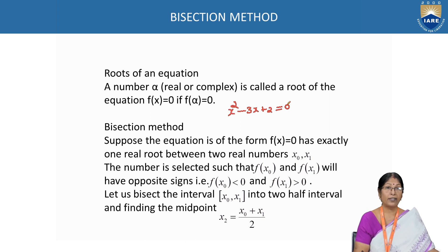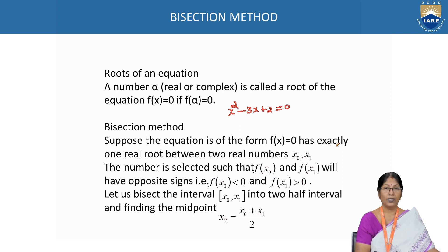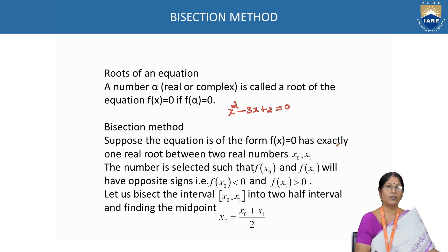They are called exact roots because they satisfy this algebraic equation. Using direct methods, it is not possible to find the roots of algebraic equations of degree more than 4, or transcendental equations, to give exact roots. But in place of exact roots, approximated roots are available. These approximated roots can be found using numerical methods, the first of which we are going to discuss is the bisection method.